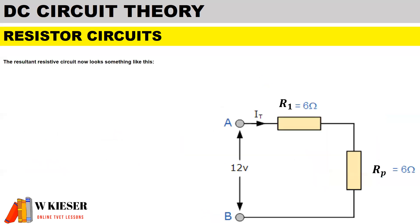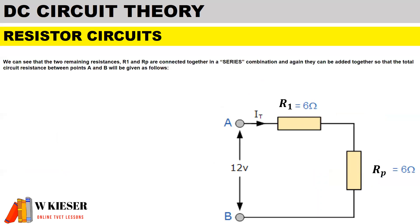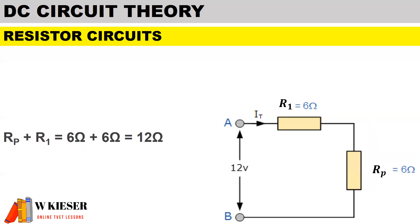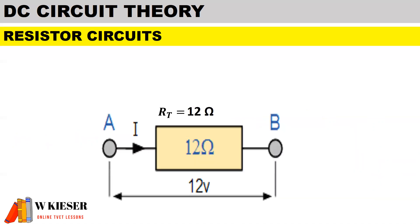The resultant resistive circuit now shows that the two remaining resistances, R1 and R parallel, are connected together in a series combination and can be added together, so the total circuit resistance between points A and B — R parallel plus R1 — gives us a total resistance of 12 Ohms.